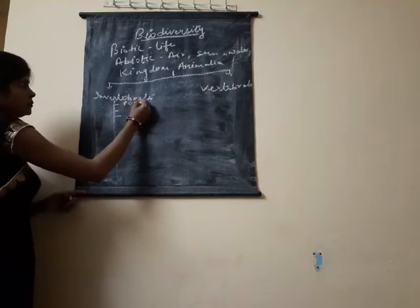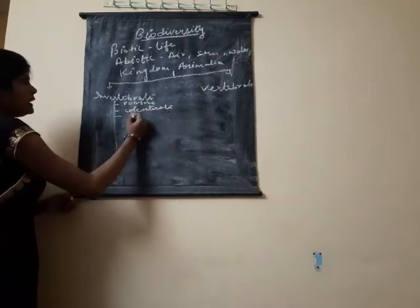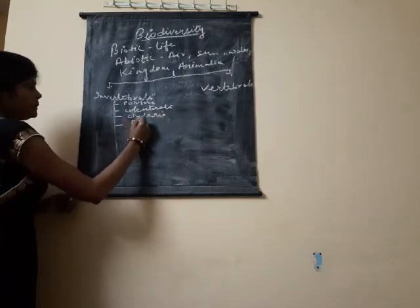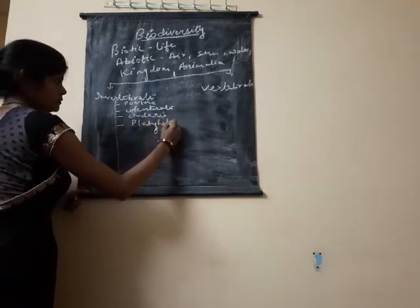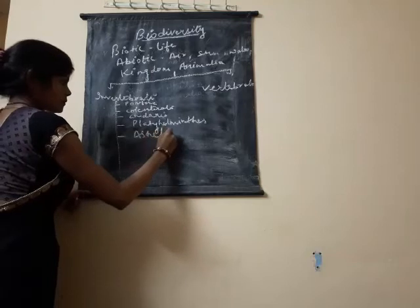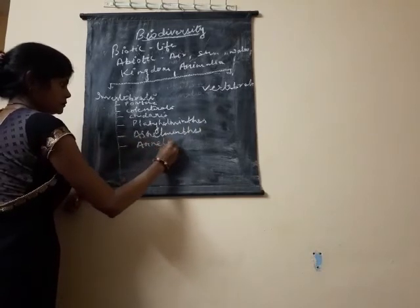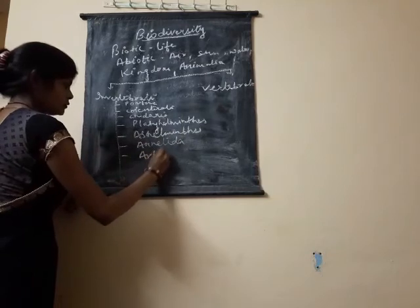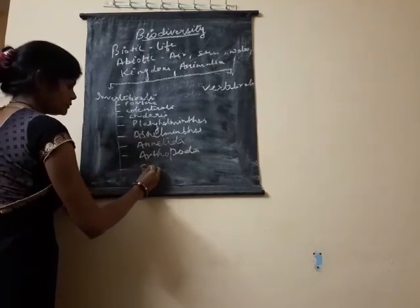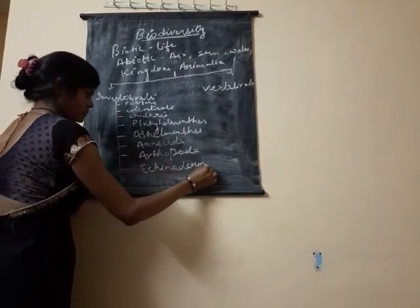The nine invertebrate phyla are: Porifera, Coelenterata, Cnidaria, Platyhelminthes, Aschelminthes, Annelida, Arthropoda, Echinodermata, and Mollusca.